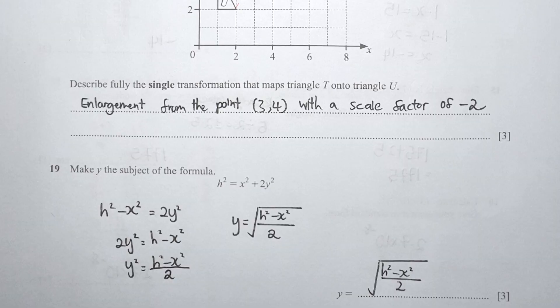For question 19, making y the subject: first rearrange everything, then to get rid of the square, introduce a square root. The final answer is the square root of (h squared minus x squared) over 2.